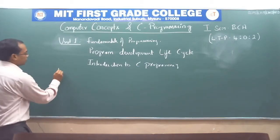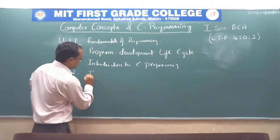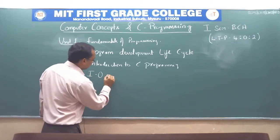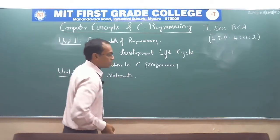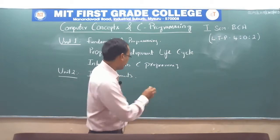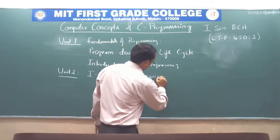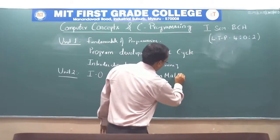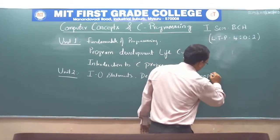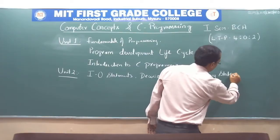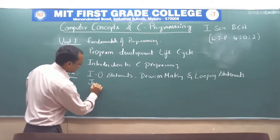In unit two, you will learn how to communicate using input-output statements, and you will be introduced to the program control flow structure, which is nothing but decision making and looping statements. Also, you will be introduced to jump statements.